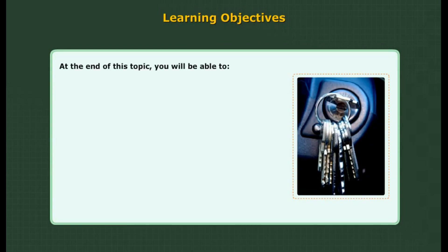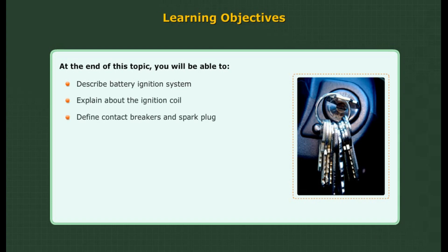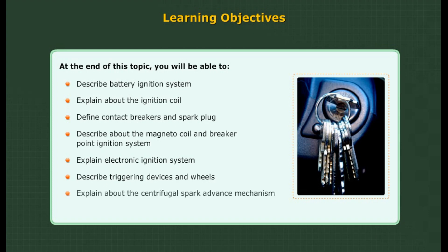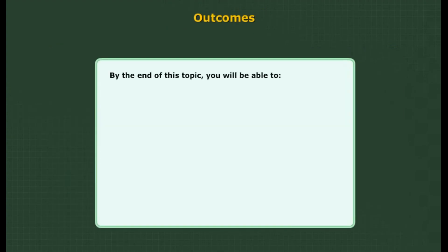Ignition system learning objectives: At the end of this topic, you will be able to describe the battery ignition system, explain the ignition coil, define contact breakers and spark plug, describe the magneto coil and breaker point ignition system, explain the electronic ignition system, describe triggering devices and wheels, and explain centrifugal and vacuum spark advance mechanisms.